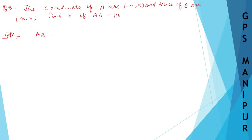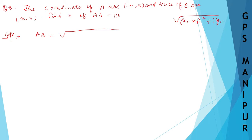So AB will be equal to root over the distance formula between A and B. The formula is: root of (x1 minus x2) whole square plus (y2 minus y1) whole square.